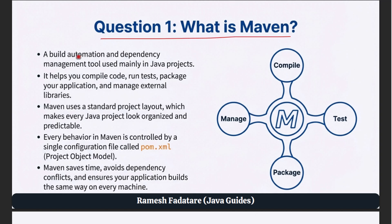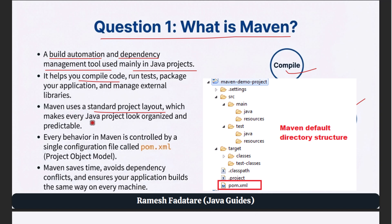Question 1: What is Maven? Maven is a build automation and dependency management tool used mainly in Java projects. It helps you compile code, run tests, package your application, and manage external libraries. Maven uses a standard project layout which makes every Java project look organized and predictable. Every behavior in Maven is controlled by a single configuration file called pom.xml, which stands for Project Object Model. Maven saves time, avoids dependency conflicts, and ensures your application builds the same way on every machine.